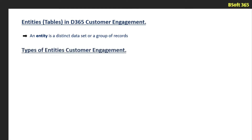What are the types of entities in Customer Engagement? We have system entities. Whenever we install the Customer Engagement application or create the Customer Engagement instance, some entities will be created like Workflows, Asynchronous Jobs, and also entities available in the Sales module and Service module — those can be considered as system entities. System entities cannot be deleted, but they can be modified.